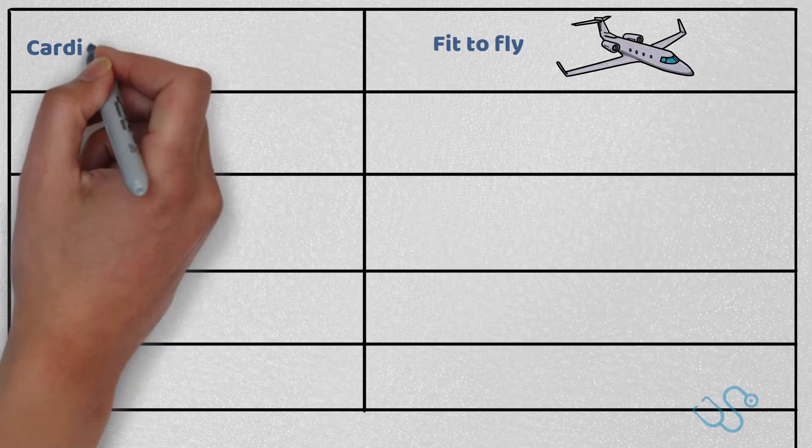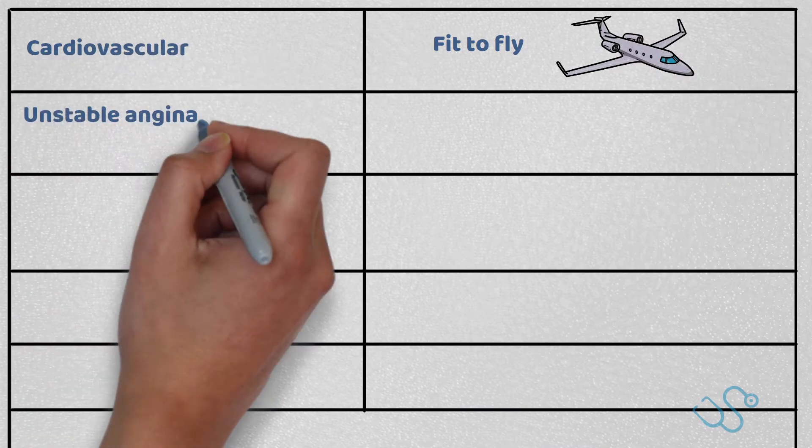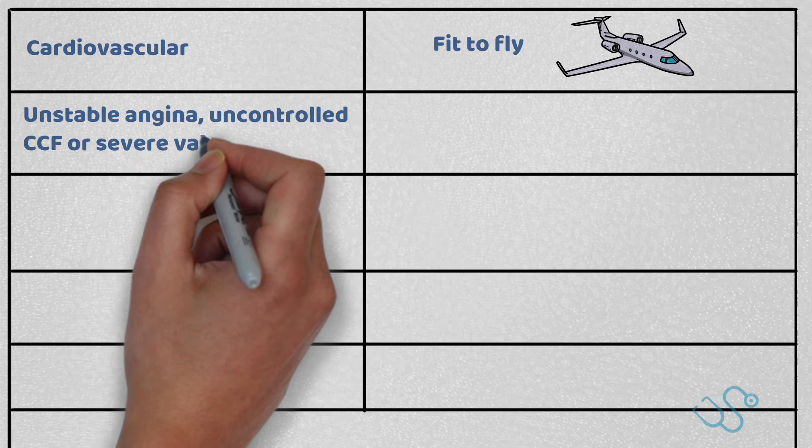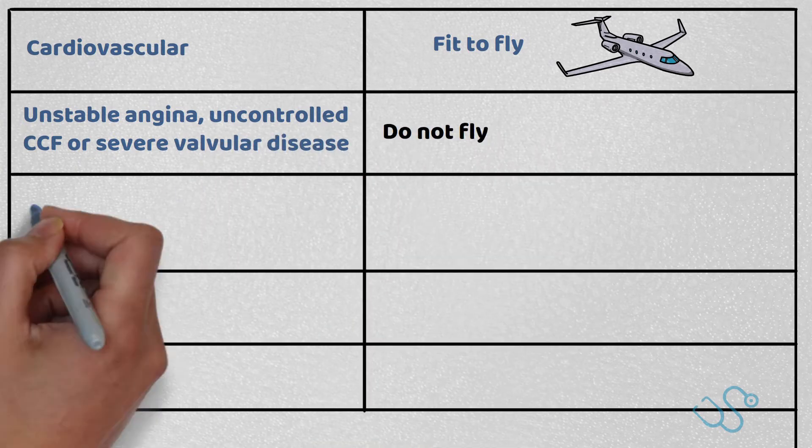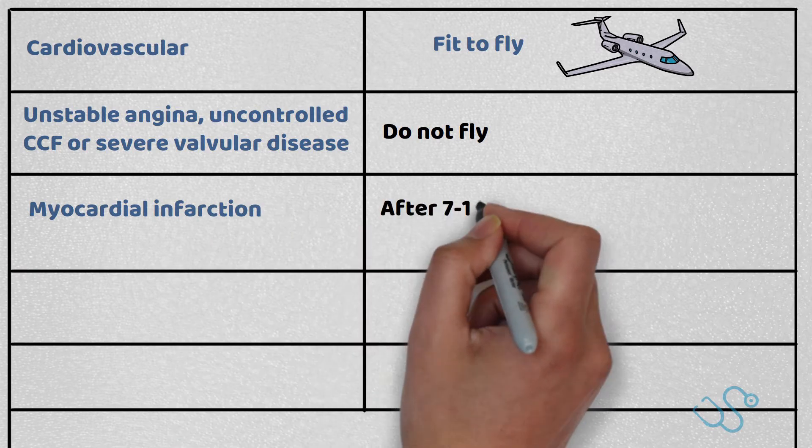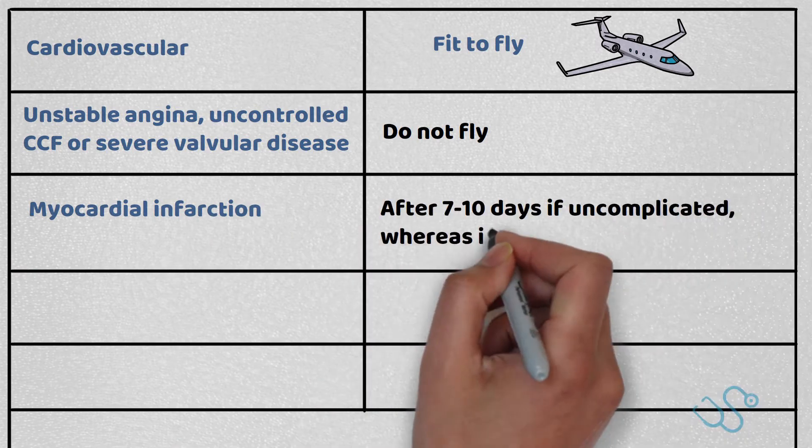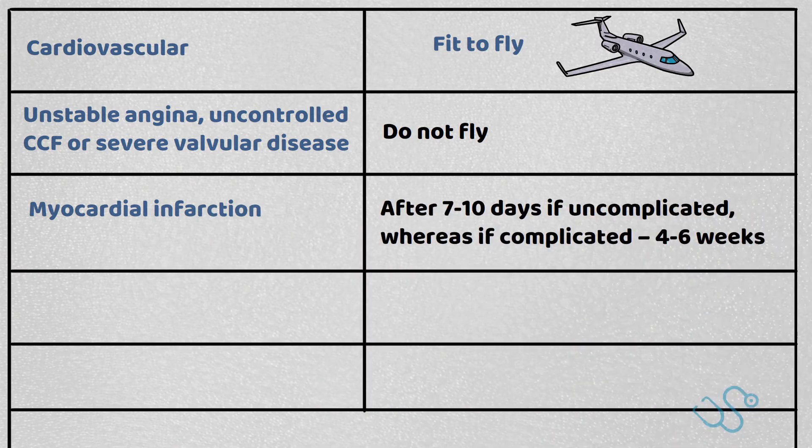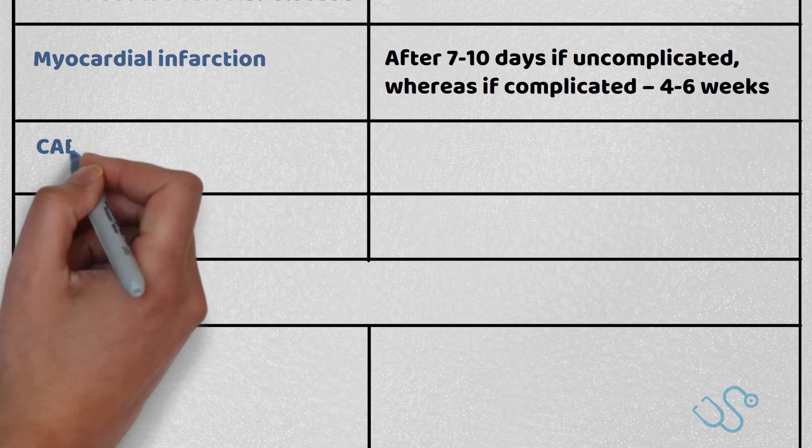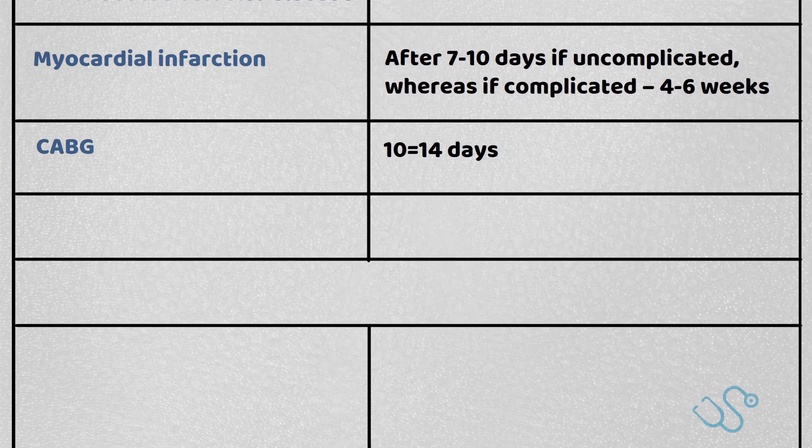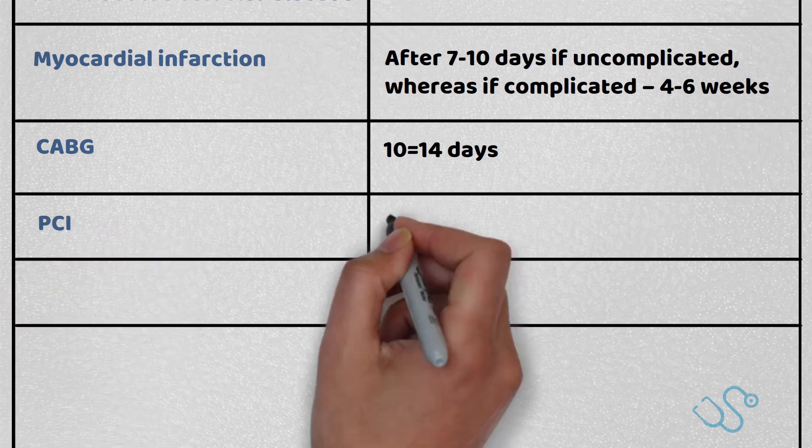Let's start with cardiovascular disease. If you've got unstable angina, uncontrolled CCF or severe valvular disease, you're advised not to fly. If you've had a myocardial infarction, after 7 to 10 days if it's uncomplicated, you can fly. Otherwise, if it's complicated, it's 4 to 6 weeks. If you've had a PCI, it's 3 days.